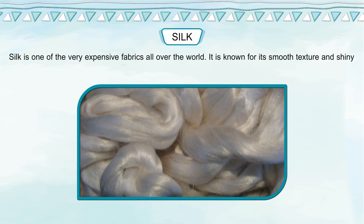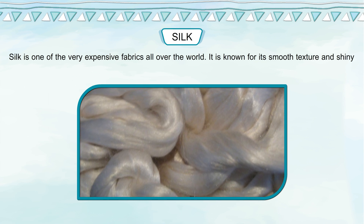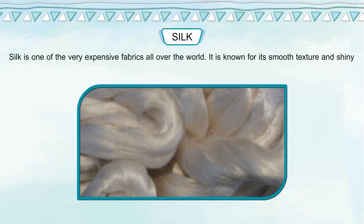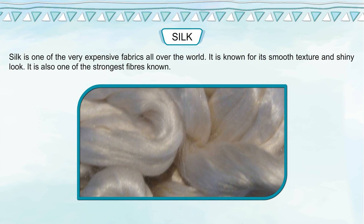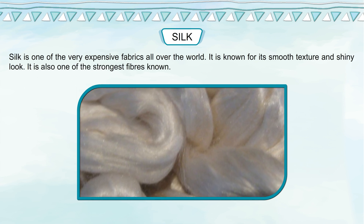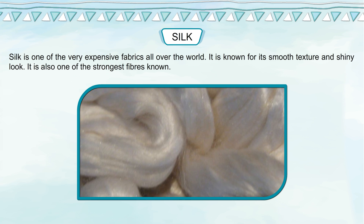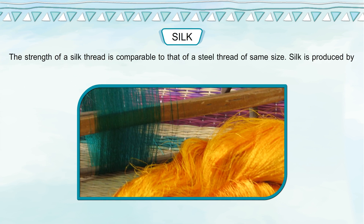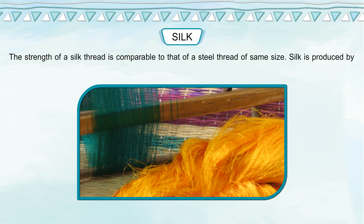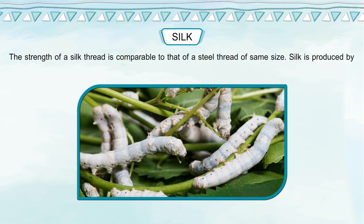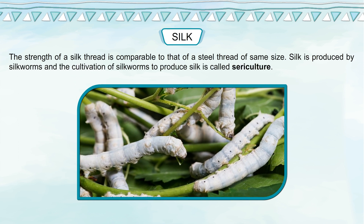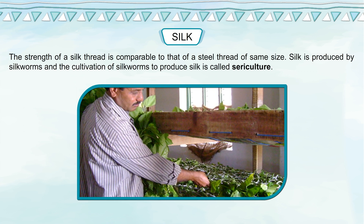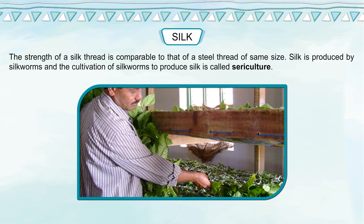Silk is one of the most expensive fabrics in the world. It is known for its smooth texture and shiny look, and is also one of the strongest fibers known. The strength of a silk thread is comparable to that of a steel thread of the same size. Silk is produced by silkworms, and the cultivation of silkworms to produce silk is called sericulture.